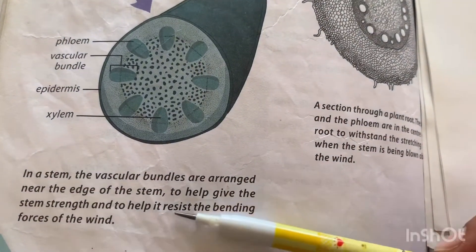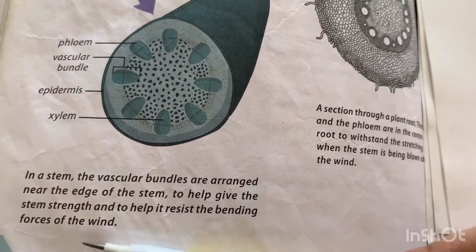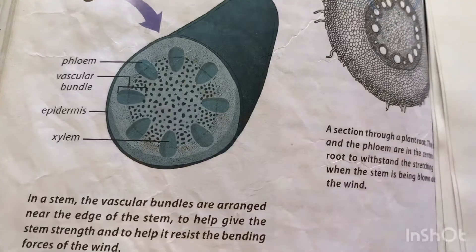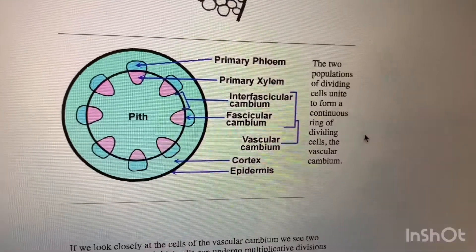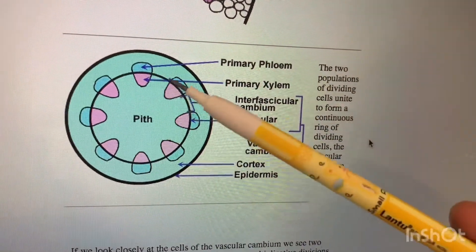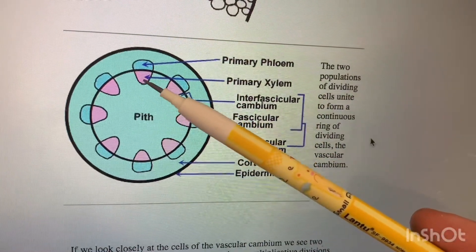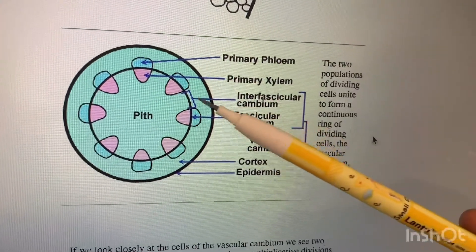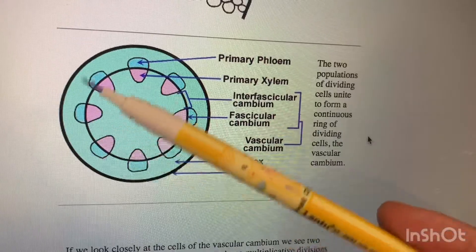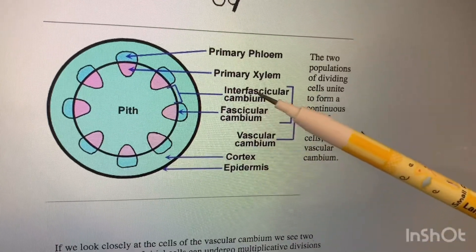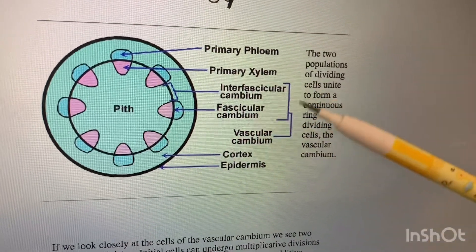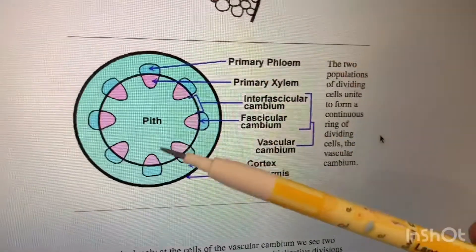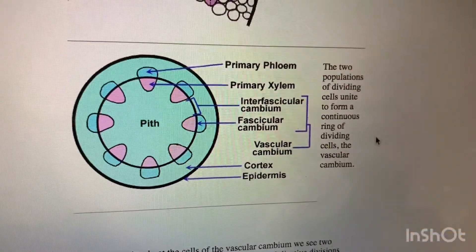From the book: in a stem, the vascular bundles are arranged near the edges to give the stem strength and resist the bending forces of the wind. In a labeled diagram, we can identify the primary phloem and primary xylem. The region between them is the interfascicular cambium, and the line between the cells is the fascicular cambium. Both the interfascicular cambium and the fascicular cambium combine to form the vascular cambium. The outer cortex and epidermis surround these, and inside we have the pith.